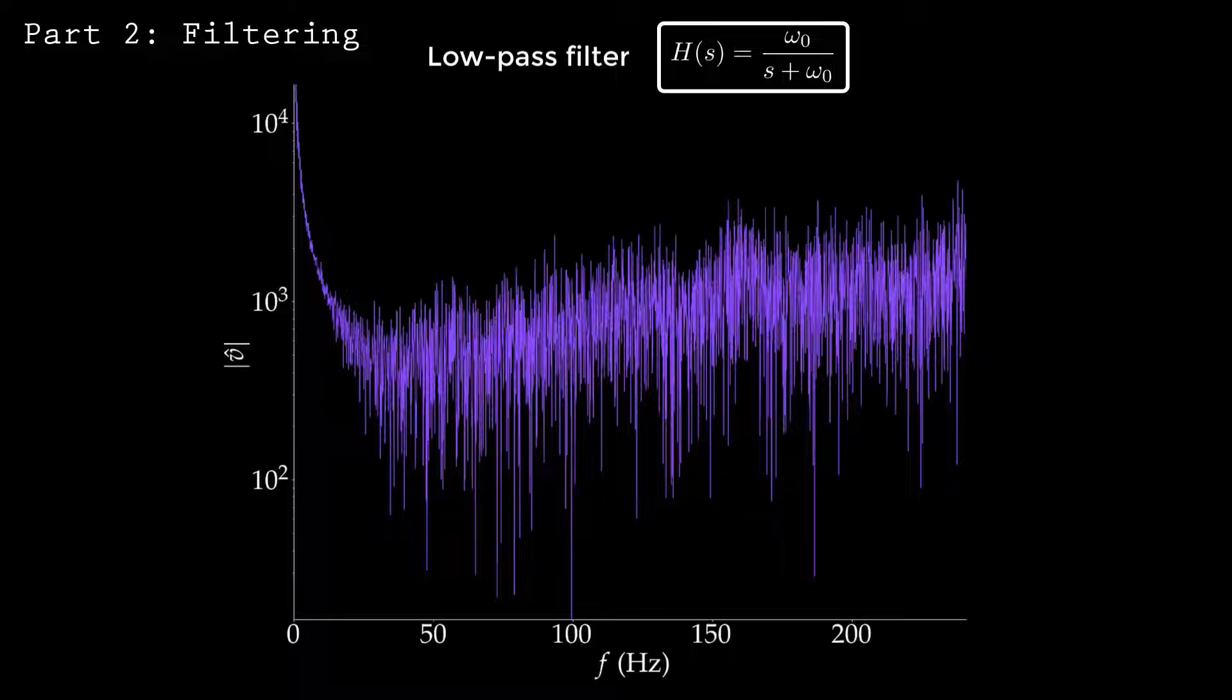Applying a low-pass filter will remove these high frequencies and yield an improved estimate of the speed. This will be important for our speed control. Designing a low-pass filter requires that you specify a cutoff frequency. Frequencies above the cutoff are attenuated, while those below are preserved. I'll use a cutoff of 25 Hz.